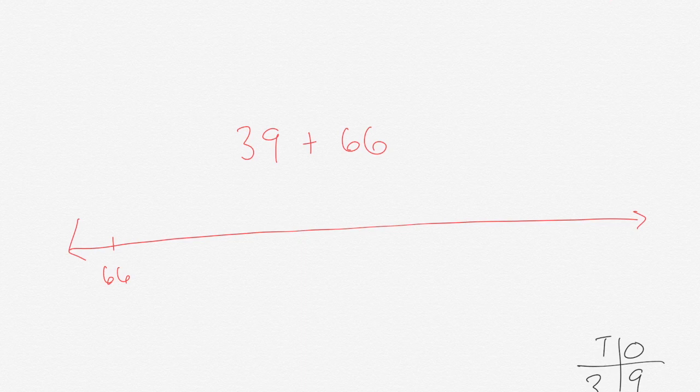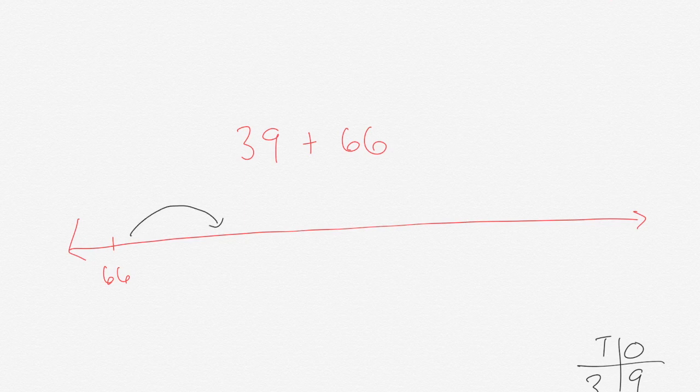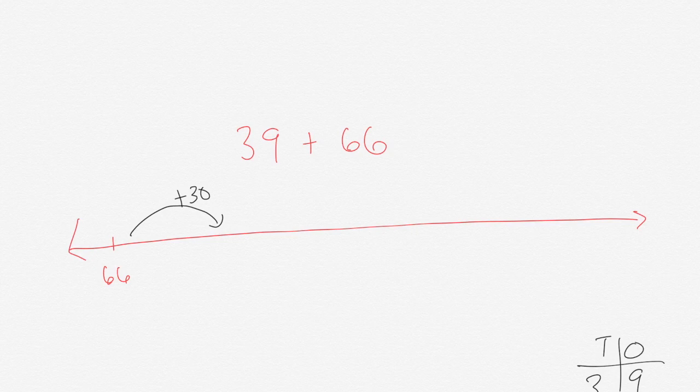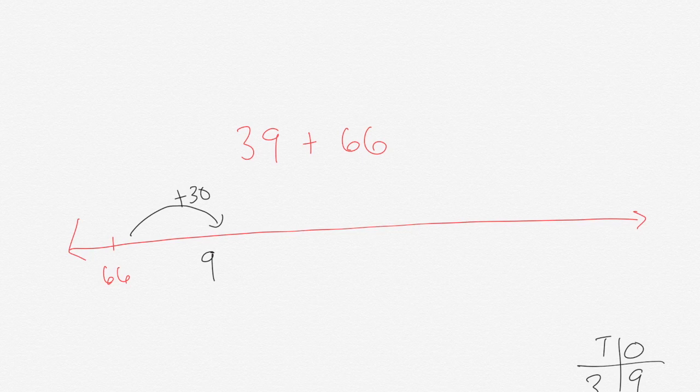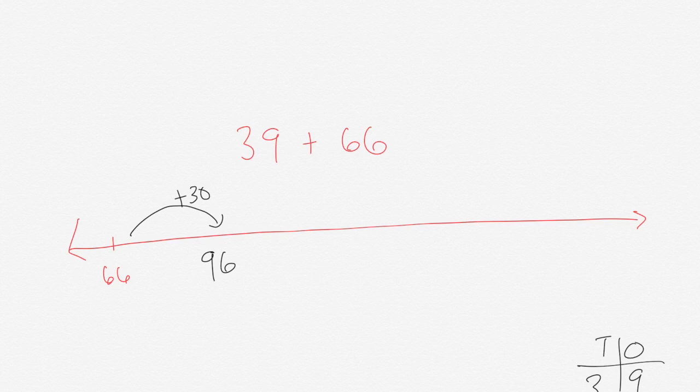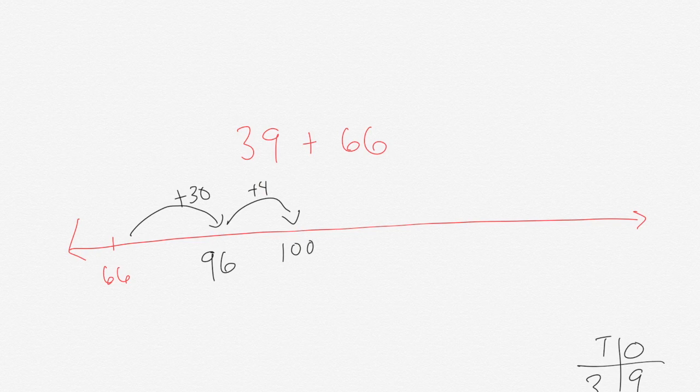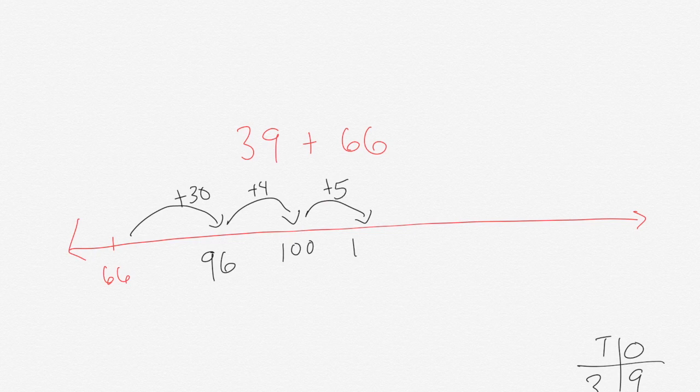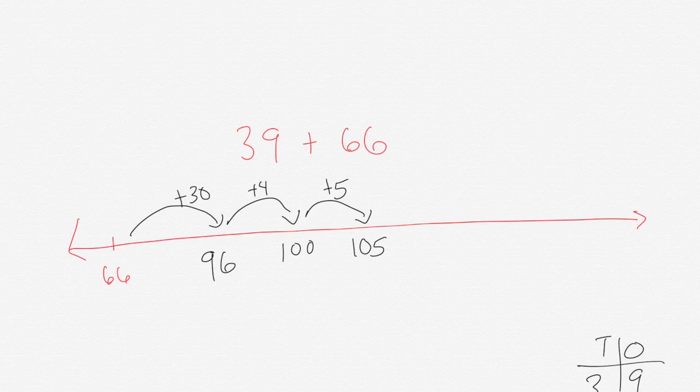All right, so I might decide I'm feeling really confident, I've been doing this and I'm good. I'm going to make a big jump of 30. So if I had six tens and I have three more tens, 30, I now have nine tens and I still have my six ones. Now I need to add nine ones. I might see that as plus four to give me 100, and then I add plus five. That's four and five gives me nine. So I have 105. So 39 plus 66 is 105. You have just solved problems using an open number line.